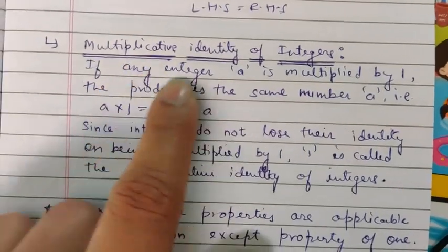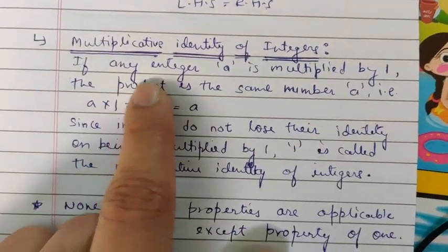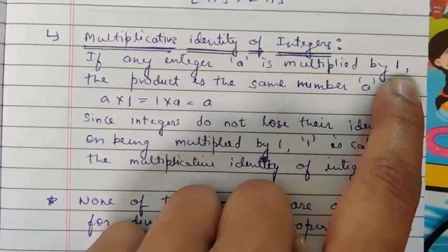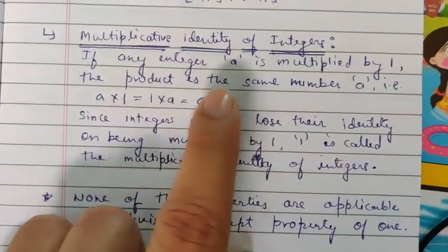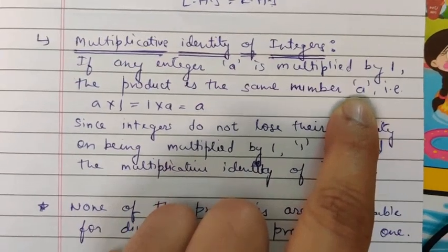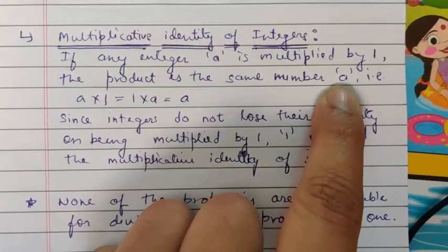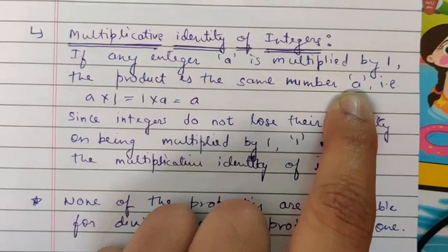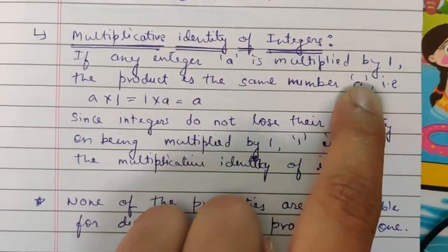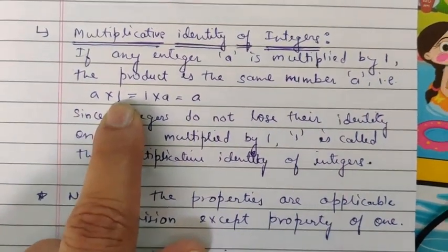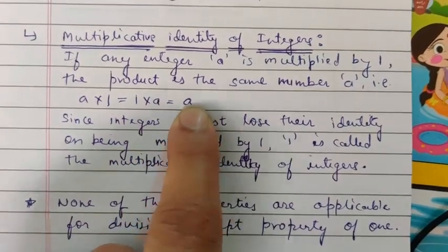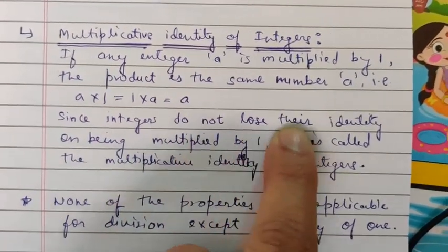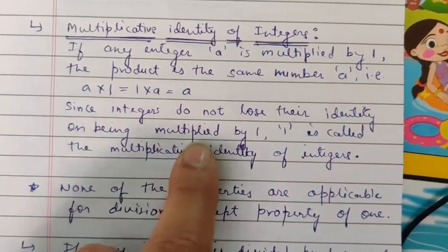Next is the multiplicative identity of integers. If any integer a is multiplied by one, the product is the same number a. So a × 1 = a, or 1 × a = a. We get the same number back. Since integers do not lose their identity on being multiplied by one, this is why one is called the multiplicative identity.